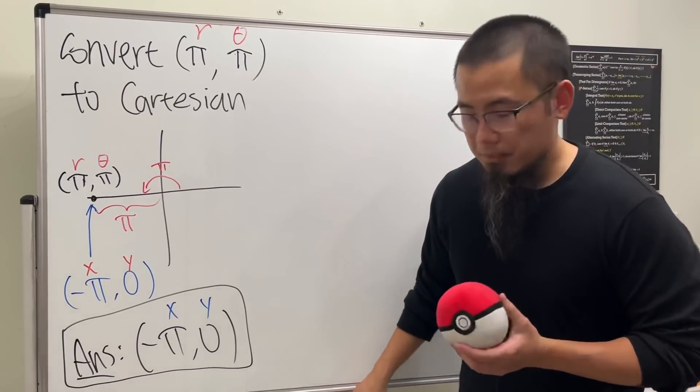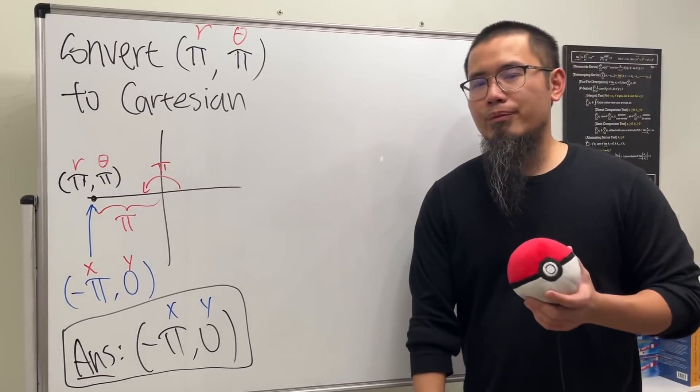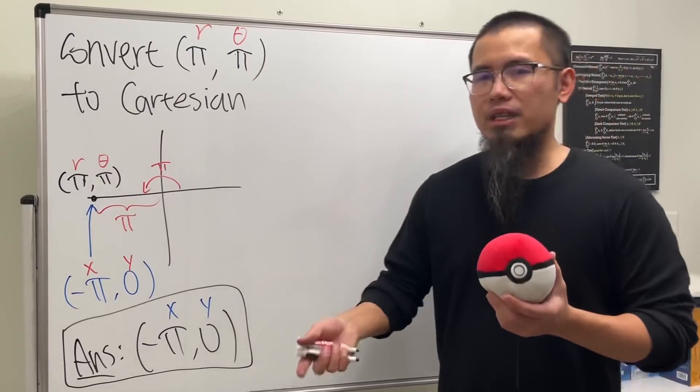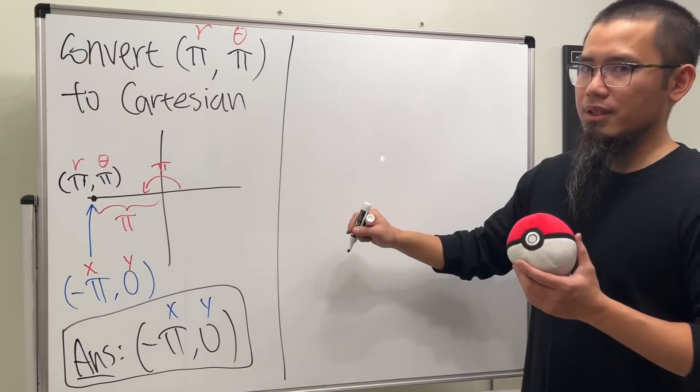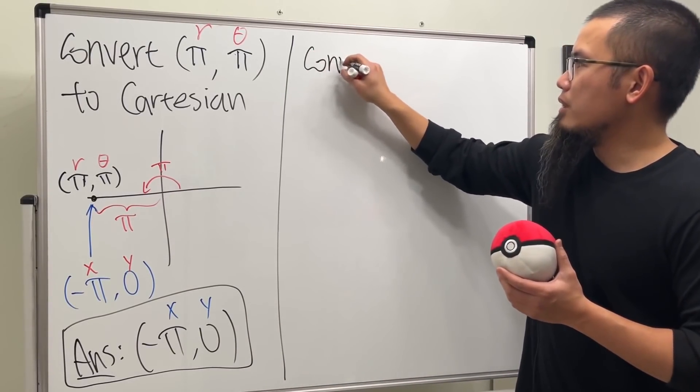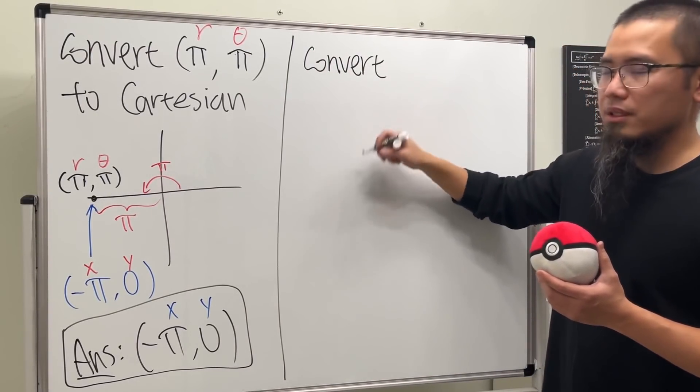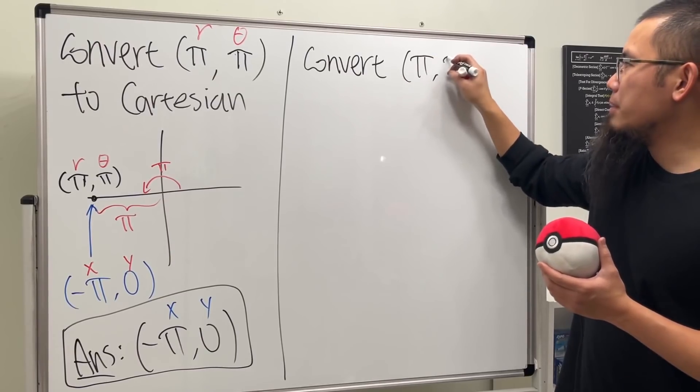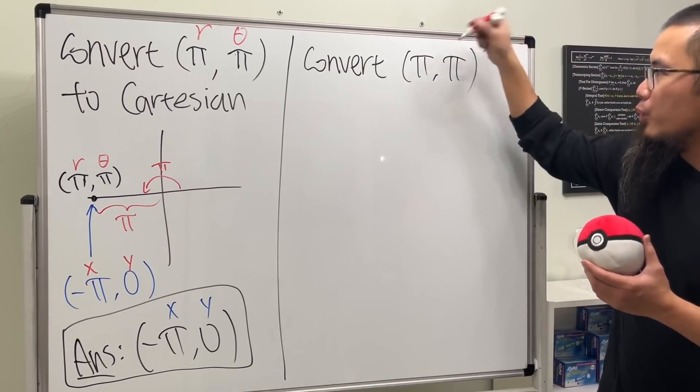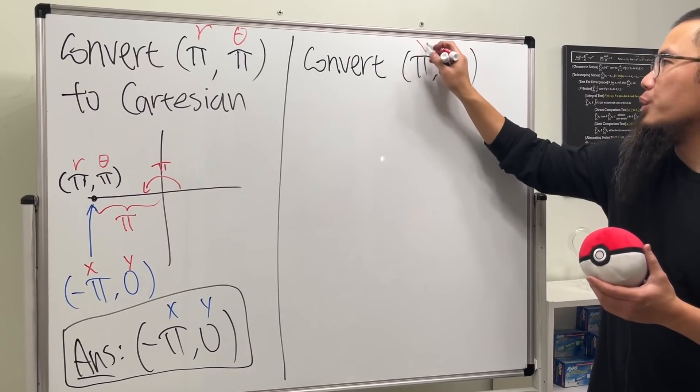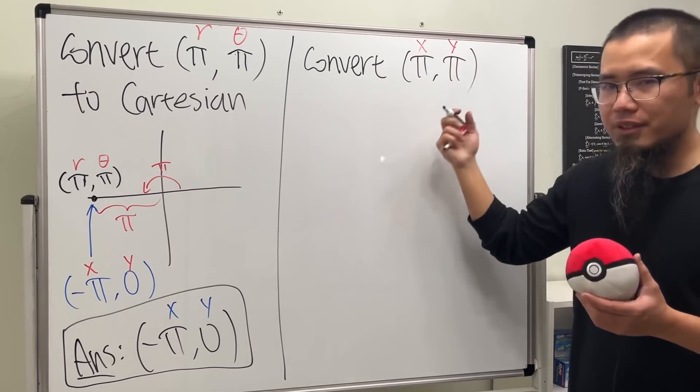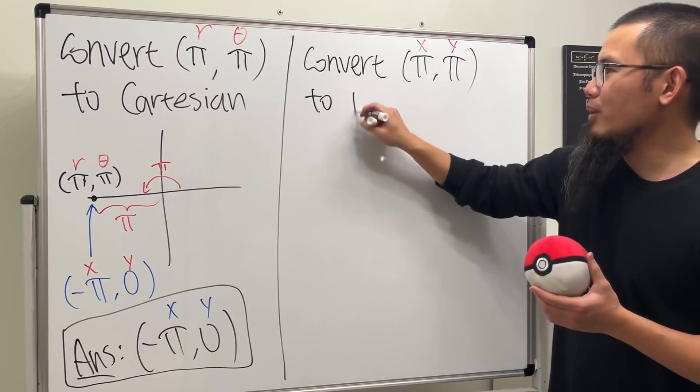And you think we are done? No! Because why don't we do it the other way around? Let's take a look. What if we want to convert (π, π), but this time we want this to be rectangular, meaning Cartesian, so we have x and y. Convert this, of course, to polar.